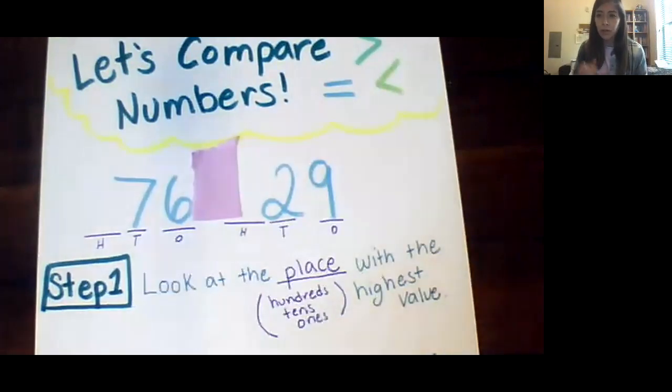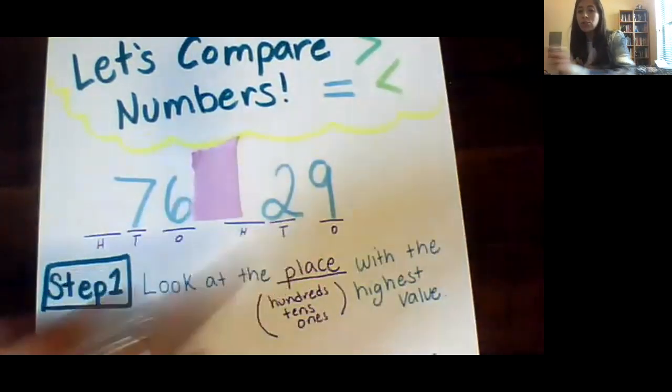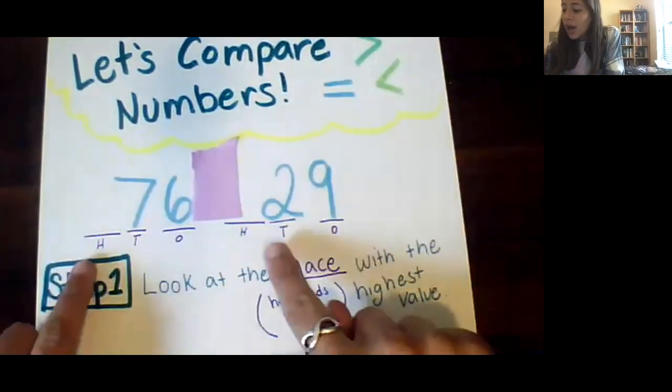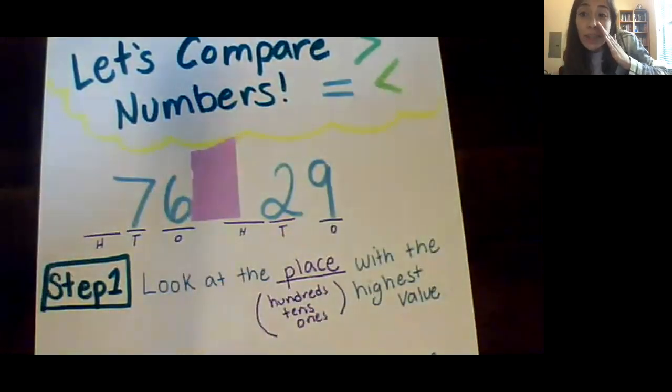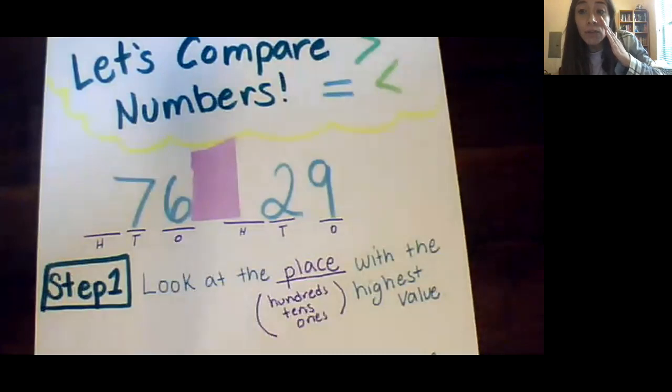The highest value means the biggest one. So which one's bigger? A one, a stick of 10, or a block of 100? If you said hundreds give yourself a pat on the back. You're always going to start with the place with the highest value and for us it's going to be the hundreds. So let's take a look and see at 76 and 29. Well I'm going to let you guys in on a secret. One thing that will really help you when you're comparing numbers is if you label both numbers with their hundreds, tens, and ones.